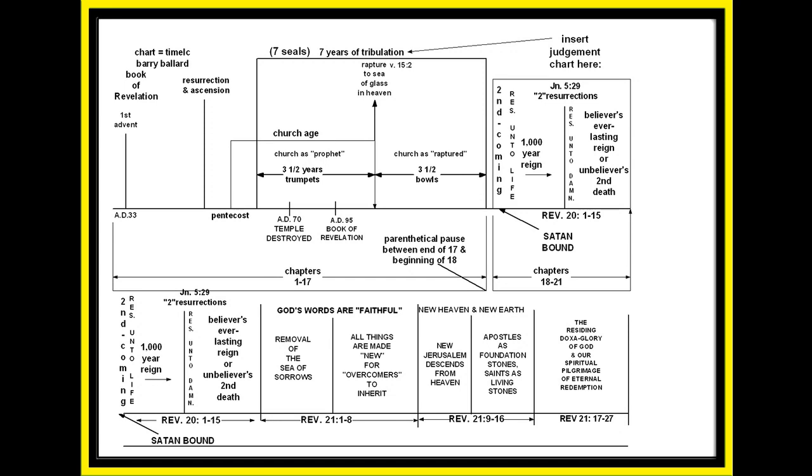We enter chapter 21, and new heaven and new earth is conveyed in three sections. It's broken down into three sections. There's a section of God's words are faithful. There's a section on the New Jerusalem. And then, there's a section on docks of glory. So, you have faithfulness of God in the new creation, a new heaven and a new earth in the new creation, and the residing docks of glory of God in the new creation. Those are your three closing descriptions of New Jerusalem. It begins with the removal of the sea of sorrows. The sea represents the sorrows in existence. They are removed. All things are made new for the overcomers who inherit the kingdom of God.